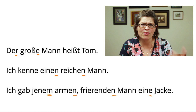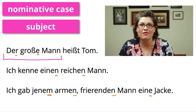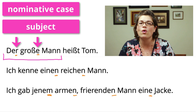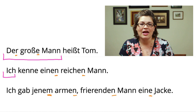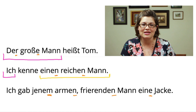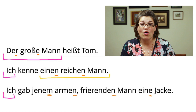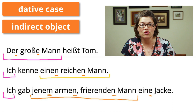Continuing from the case system video: 'Der große Mann' is in the nominative case — it's the subject of the sentence — and the declensions R and E are part of how we know that. In the next sentence, 'ich' is the subject, and 'einen reichen Mann' — a rich man — is the direct object, communicated by the two N's on 'einen reichen Mann.' In the final sentence, 'ich' is again in the nominative case as subject.